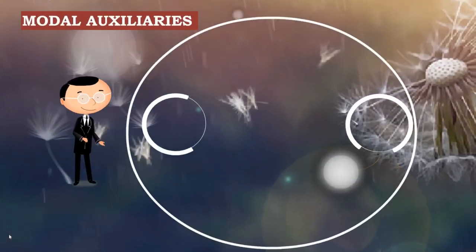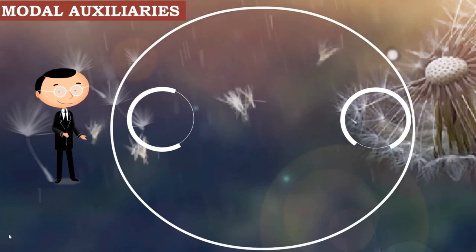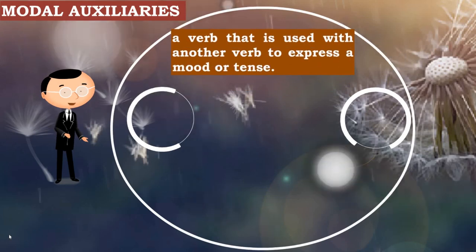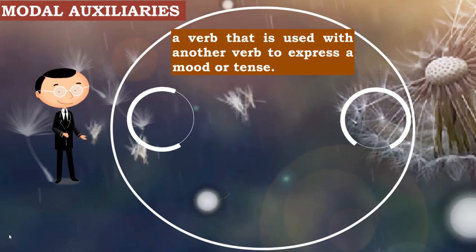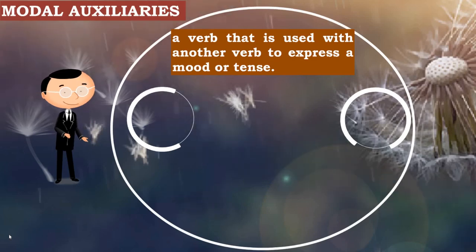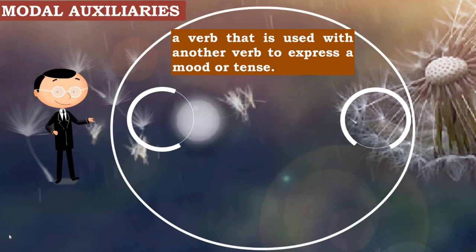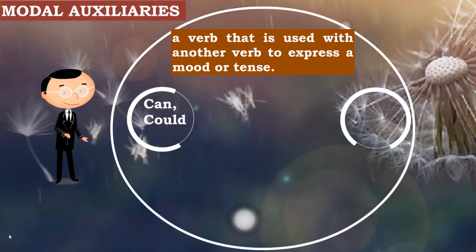We shall now move on to modal auxiliaries. These are auxiliaries used with another verb to express a mood or tense. They don't have an identity of their own — they need a main verb. Their function is to express the mood or the way in which communication is happening, and with what purpose the transaction or communication occurs.